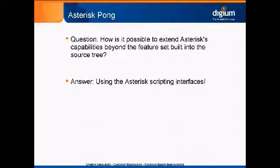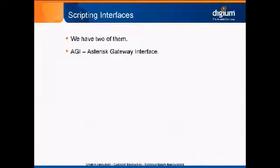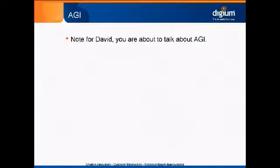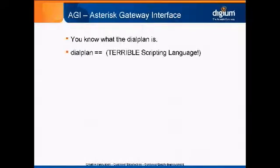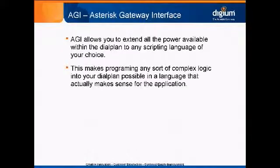We have two scripting interfaces: AGI, which is the Asterisk Gateway Interface, and AMI, which is the Asterisk Manager Interface. AGI is the tool you're going to use to extend all the power available within the dial plan to any scripting language of your choice. That makes programming any sort of complex logic into your dial plan possible in a language that makes sense for your application.